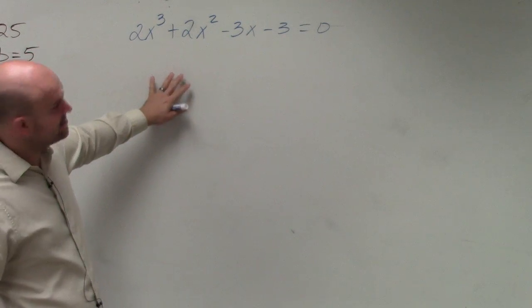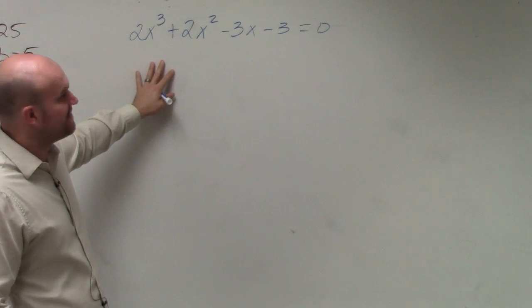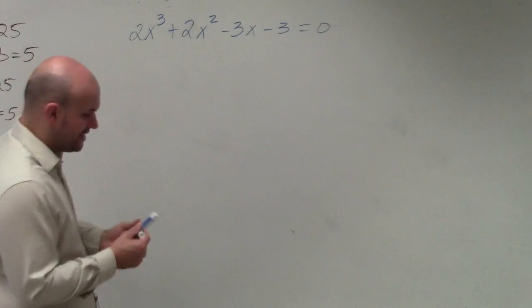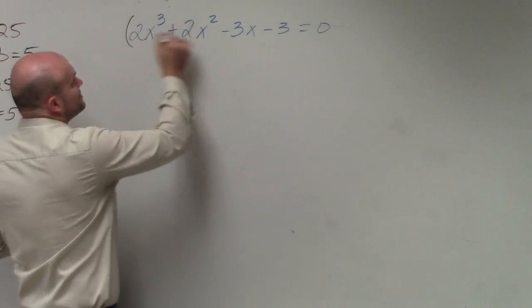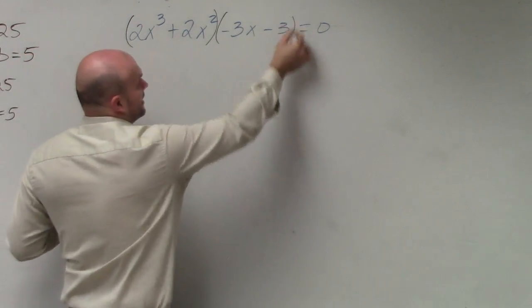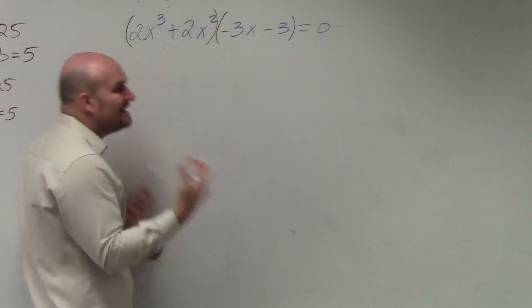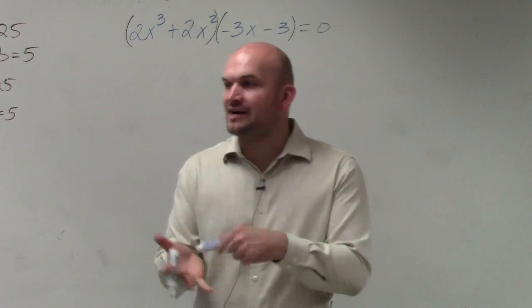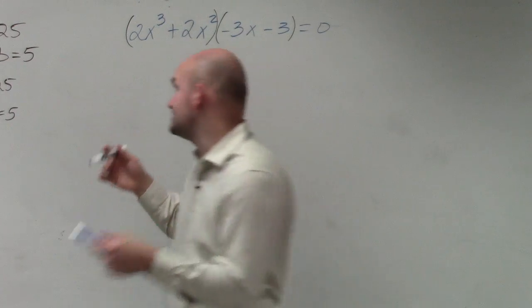Here's an example of four terms. One thing we can do is factor by grouping. Basically, factoring by grouping tells us to group the first two terms and the last two terms. Then we factor out the GCF out of each of those first and second sets.